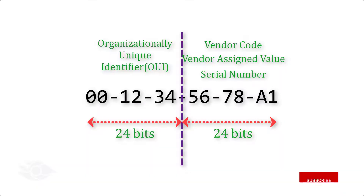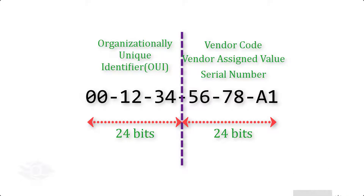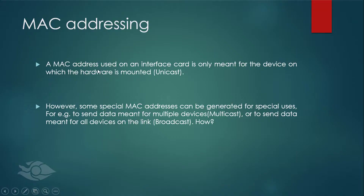With this structure, it's impossible for two different manufacturers to have devices with the same MAC address. A MAC address used on an interface card is only meant for the device on which the hardware is mounted. However, some special MAC addresses can be generated for special uses — for example, the sending of data to multiple end stations at one time, or to all end stations on the link. But how?